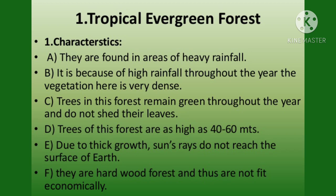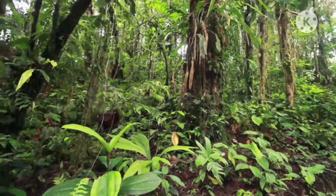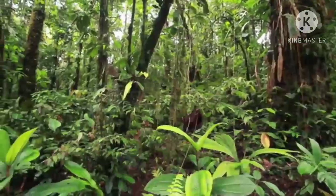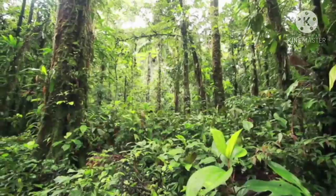First, the tropical evergreen and semi-evergreen forest. These forests are found in areas where more than 200 cm of rainfall occurs. These areas are the Western Ghats, northeastern hills, and Andaman and Nicobar Islands. The trees reach great heights up to 60 meters and these forests appear green all over the year. The trees include rosewood, mahogany, and ebony. The semi-evergreen forests are found in areas where rainfall is about 150 to 200 cm. Such forests have a mixture of evergreen and moist deciduous forests. Mahogany, kampur, and rosewood are grown in the tropical and semi-evergreen forests.